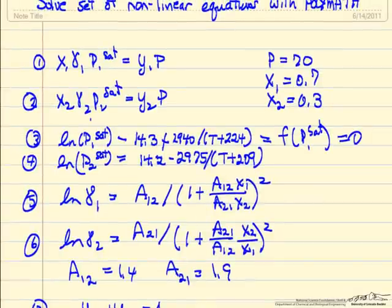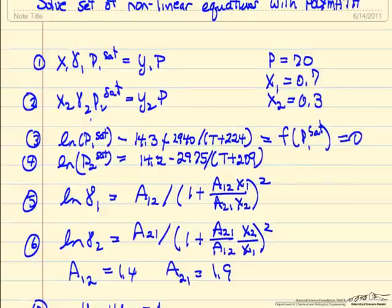And we will do the same for all the equations, bring everything to one side, we will call each function of a different variable, so we have seven variables, seven equations, seven functions that we are trying to set equal to zero.